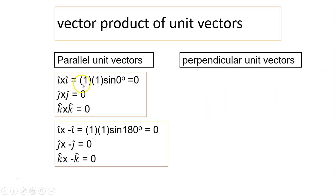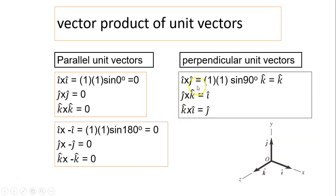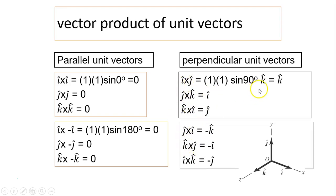For perpendicular unit vectors, i and j, i and k, and j and k are all perpendicular to each other. i cross j equals magnitude of i times magnitude of j times sine 90°, and using the right-hand rule gives direction k. Similarly, j cross k gives direction i, and k cross i gives direction j. On the other hand, j cross i gives negative k, k cross j gives negative i, and i cross k gives negative j.